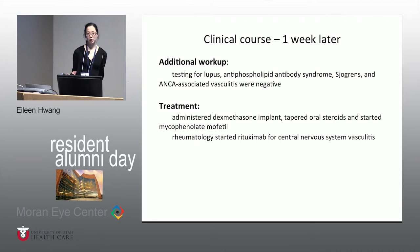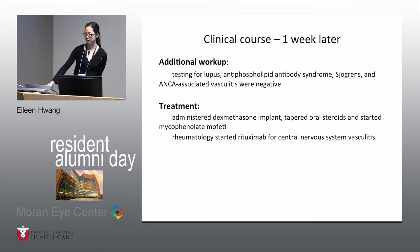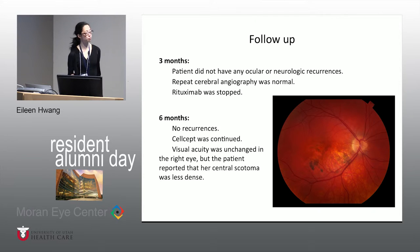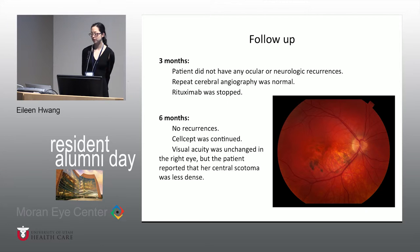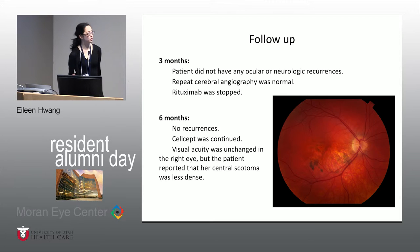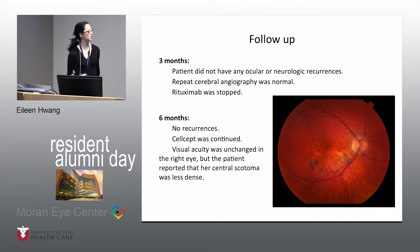The diagnosis was felt to be a rare entity — relentless placoid chorioretinitis. On follow-up, she did not have any recurrences at three months, and her repeat cerebral angiogram was normal, so her rituximab was stopped. At six months, she was still doing well with no new lesions, and that previously active-appearing lesion now looks atrophic with some hyperpigmentation.